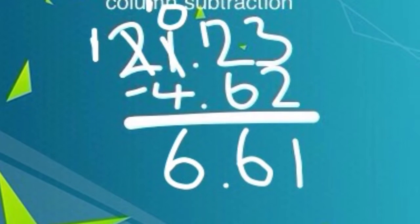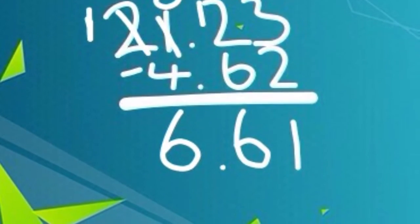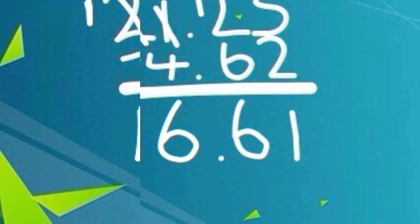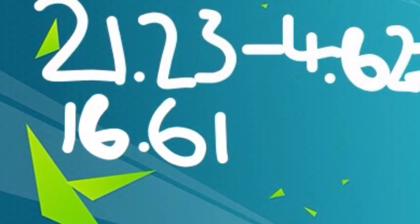0 minus 4 can't happen so we have to borrow 10 from 20 making it 10, then minus 4 equals 6. 10 minus nothing equals 10. The answer is 16.61.